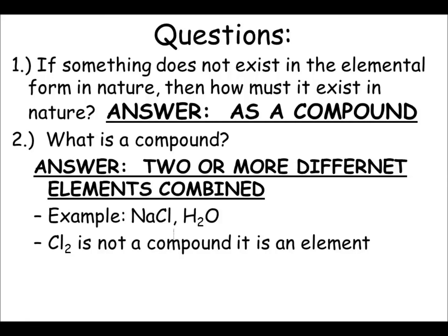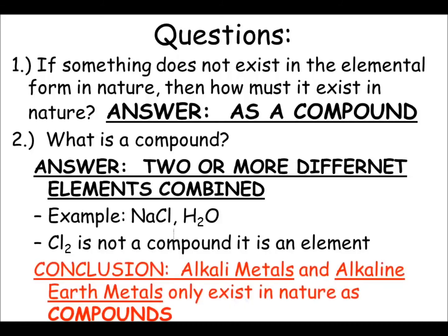But take a look at Cl2—capital C, lowercase l, and a little 2. This is not a compound; it's an element, because it only has that one capital letter. So in conclusion, alkaline metals and alkaline earth metals only exist in nature as compounds, not as elements, because they're so reactive.